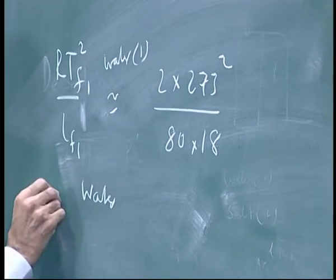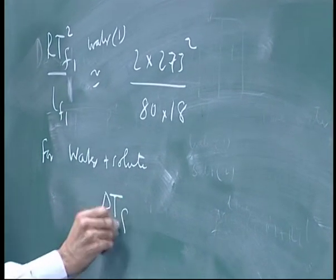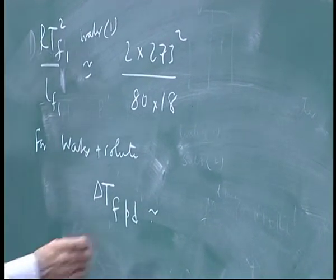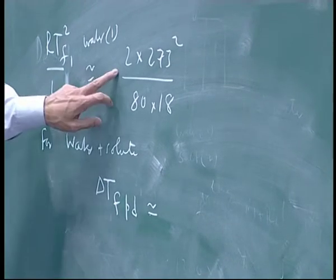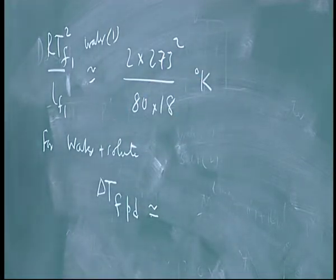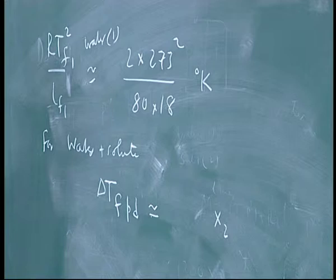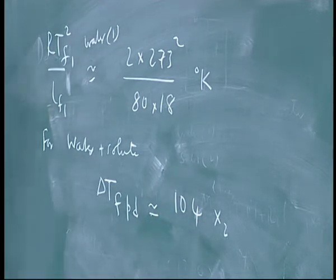If you have a calculator. So for water plus solute delta T freezing point depression is approximately given by, this must come out in degrees K because R Tf has the same units as Lf. What does this come to? Does anybody have a calculator here? 407, 20 is something like 90 or 100. So 104, let's say, and 4 x2 approximately.